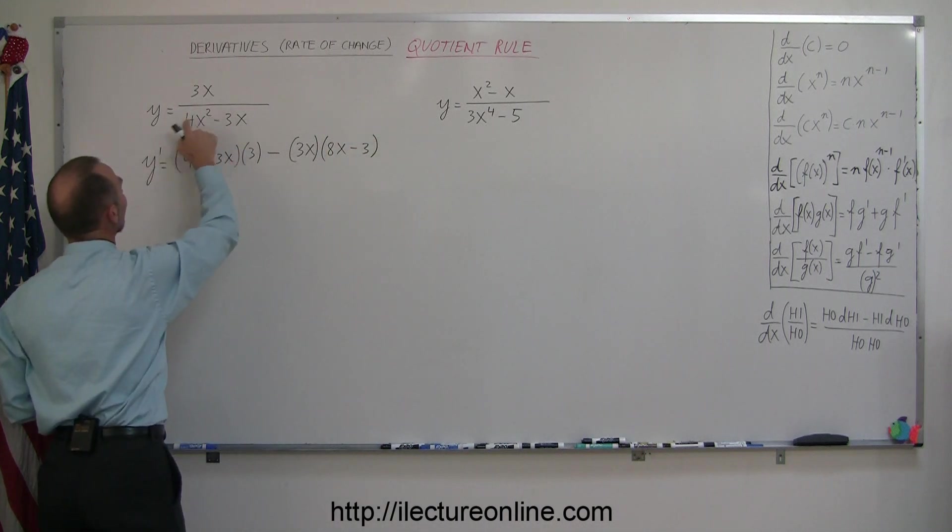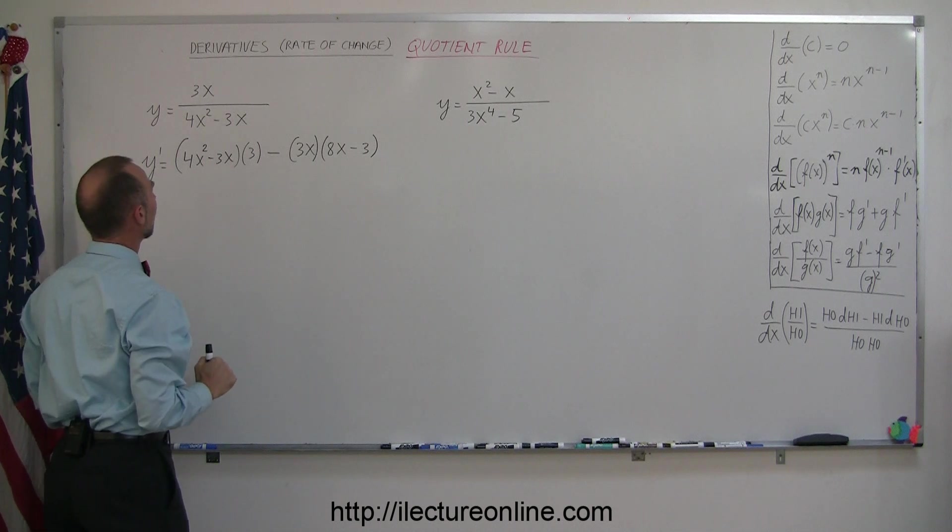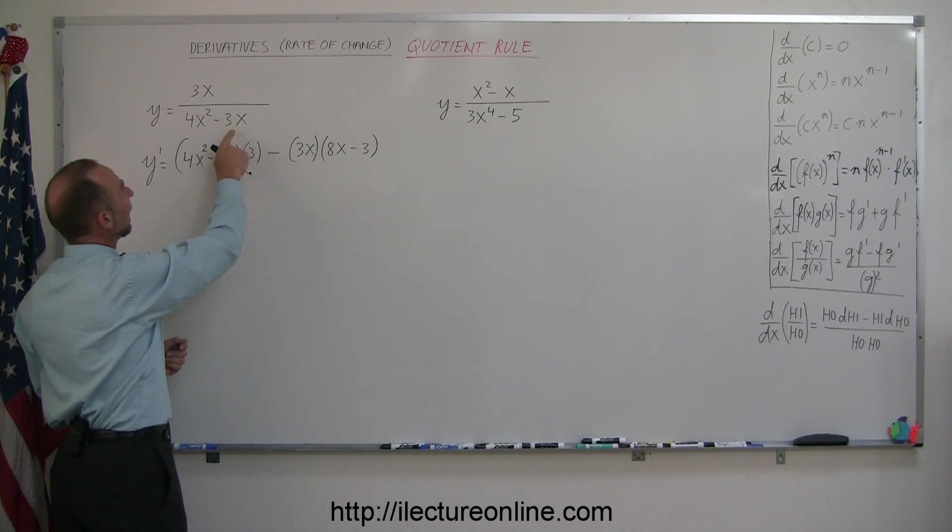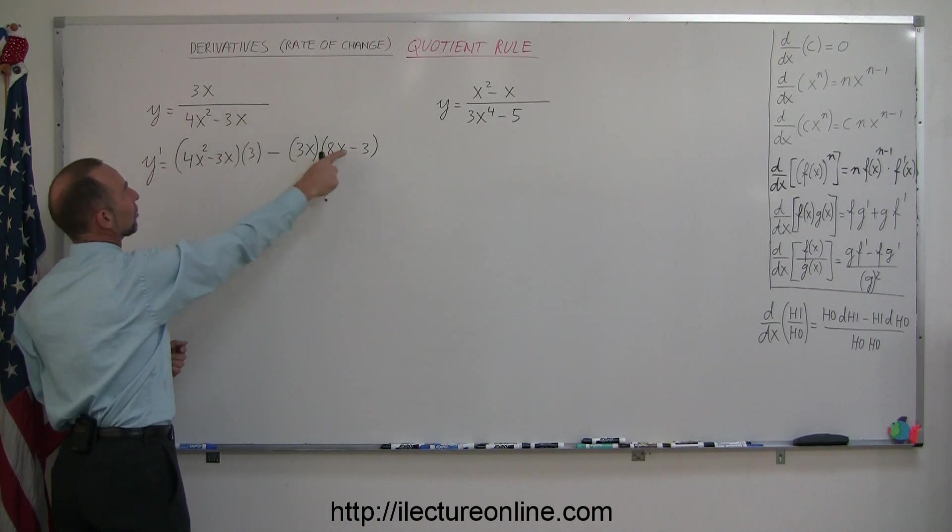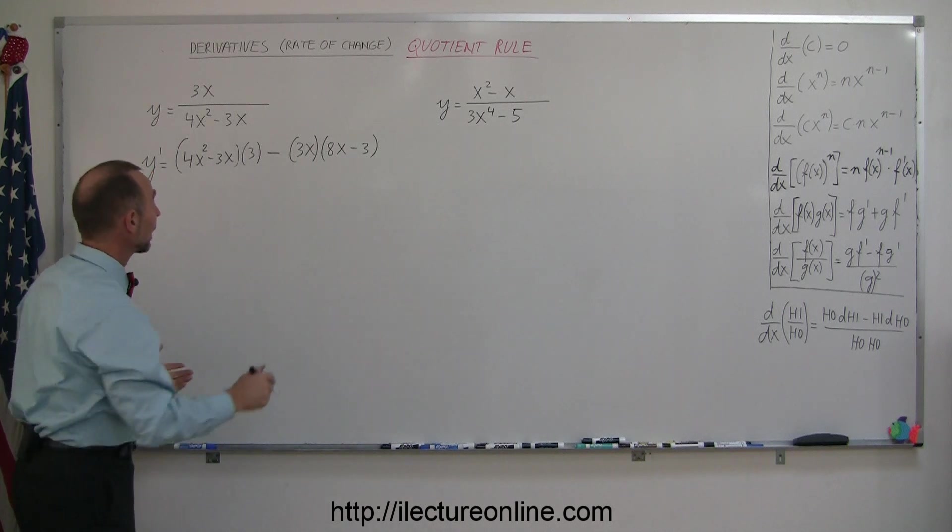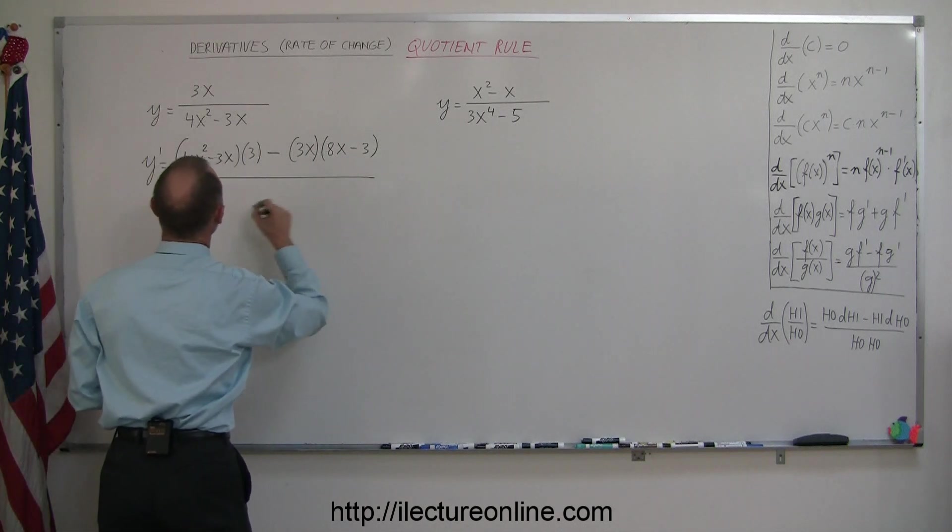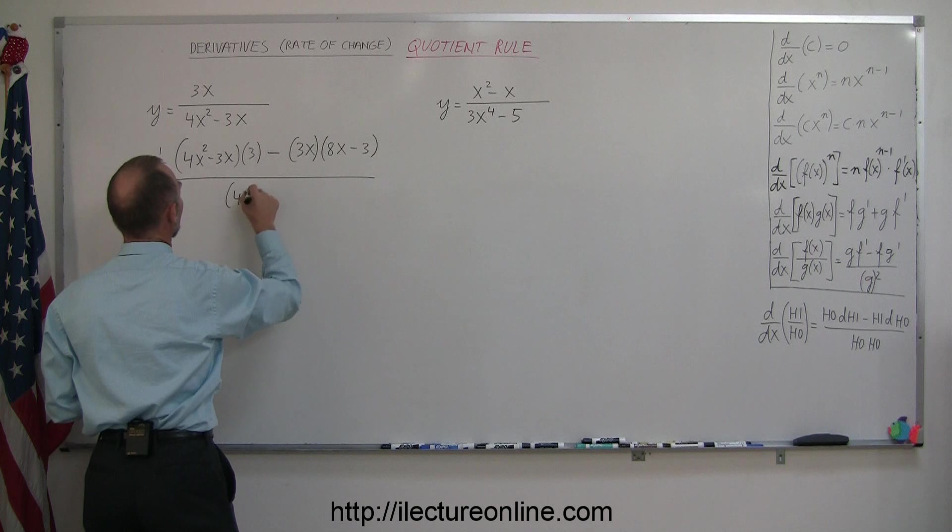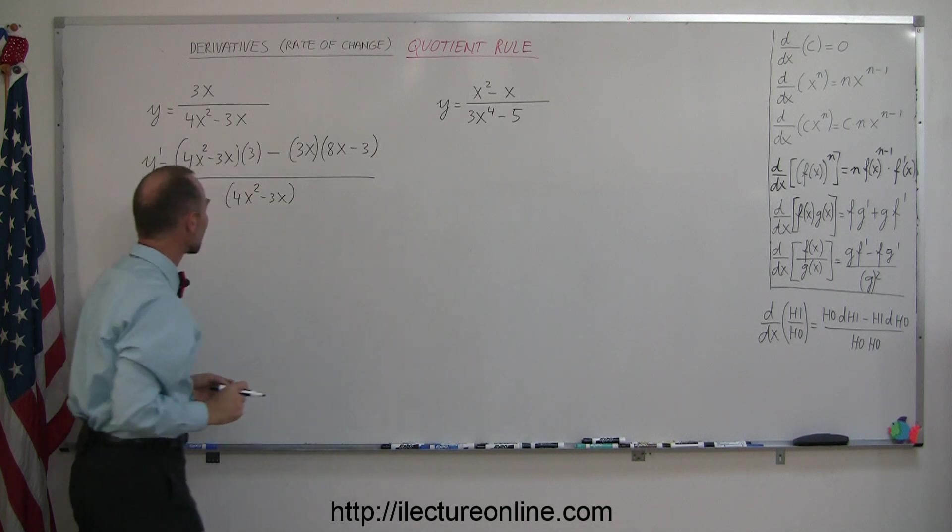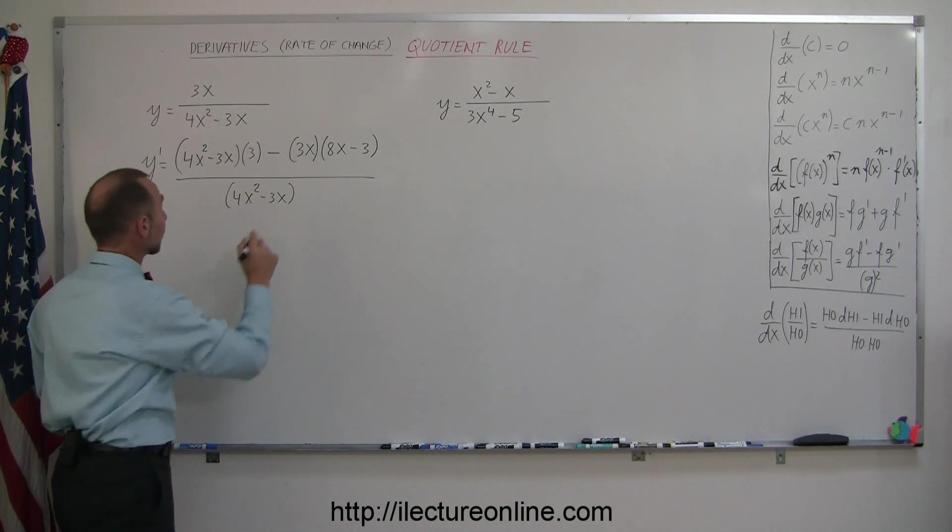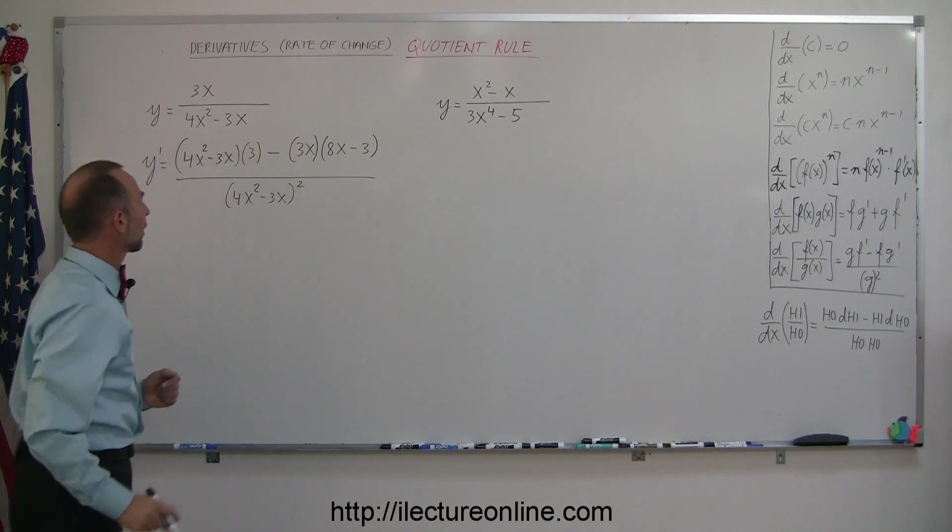the numerator 3x times the derivative of the denominator which is 8x - 3. Remember it's 2 times 4 which is 8 times x to the first power, subtract 1 from the exponent. The derivative of 3x, the x drops out giving minus 3. Then we divide by the denominator squared (4x² - 3x)². Don't forget to square that.